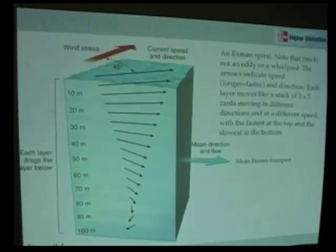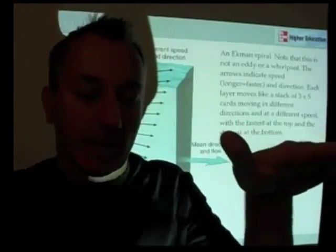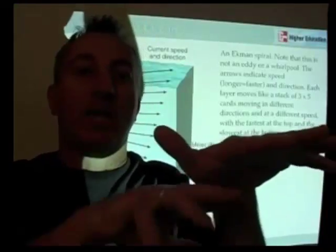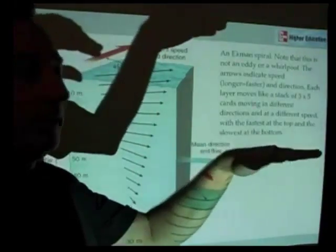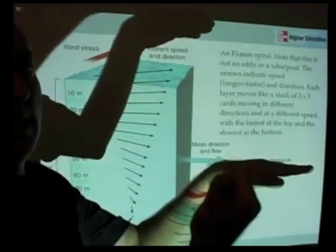Okay, let me repeat that. The average direction, so adding up all the Ekman vectors, adding up all the directions and adding up all the speeds, the average motion of water is going to be, in the northern hemisphere, 90 degrees to the right.